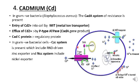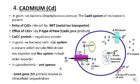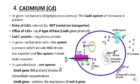In gram-negative bacterial cells, the CZC system which includes the RND-driven zinc exporter, and the NCC system which includes nickel exporter, is present. In cyanobacteria, the SMT operon is involved in resistance to cadmium. It consists of two genes: SMTA and SMTB. SMTA gene encodes MT protein involved in intracellular sequestration, while SMTB gene controls the expression of SMTA gene.